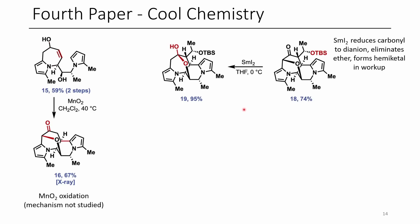Another cool reaction is their use of samarium iodide. They go from a ketone to a hemi-ketal: the samarium iodide reduces the ketone to an alkoxide as well as a carbanion, that carbanion eliminates the alkoxide, and then upon workup the enolate and alkoxide are both protonated and the alcohol engages the ketone to form the hemi-ketal.